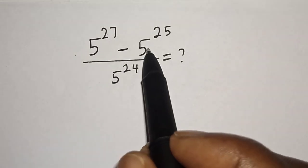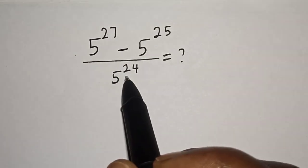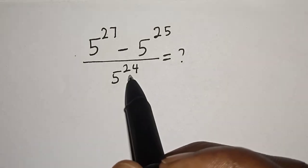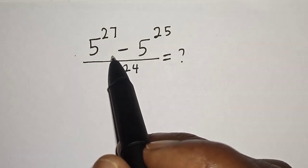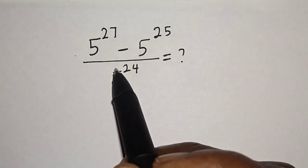5 raised to power 27 minus 5 raised to power 25 over 5 raised to power 24 is equal to what? Hi everyone, welcome to my class. In this class, we want to simplify this nice math question. But before we proceed,